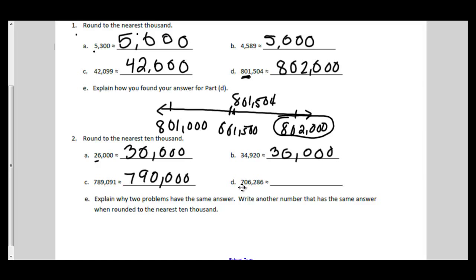The last one is between 700,000 and 710,000 because there's a zero in the tens place. The midway point is 705,000, so it rounds to 710,000. Notice that in part two, problems A and B have the exact same answer. Stop for a minute and try to explain why before pressing play.